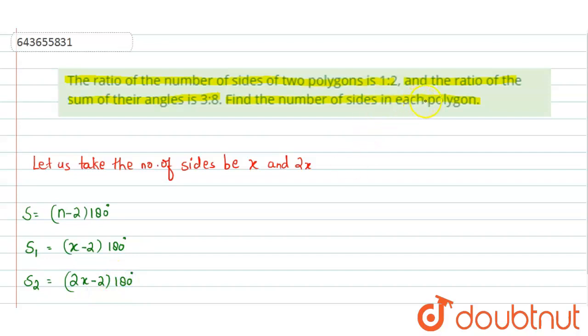Now in the question, the ratio of sum of their angles is given as 3:8. So we can write S1/S2 = [(x-2) × 180°] / [(2x-2) × 180°] and this ratio is given as 3/8.